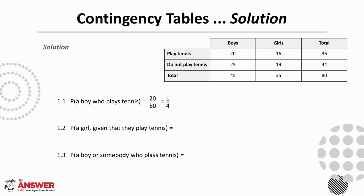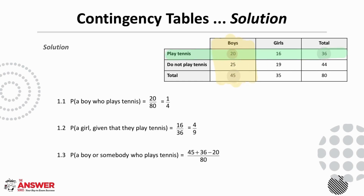For 1.2, the probability that the learner is a girl given that they play tennis. Here our denominator isn't the total number of learners but the total number of learners that play tennis. The probability of selecting a girl who plays tennis is 16 over 36, which simplifies to 4 over 9. For 1.3, to find the probability of a boy or somebody who plays tennis, we look at the total number of boys and the total number who play tennis and add them together. These 20 boys are in both totals, so we subtract 20, divide by 80, giving 61 over 80.